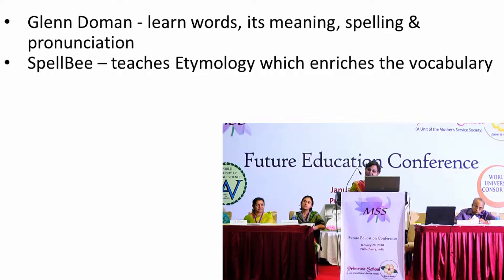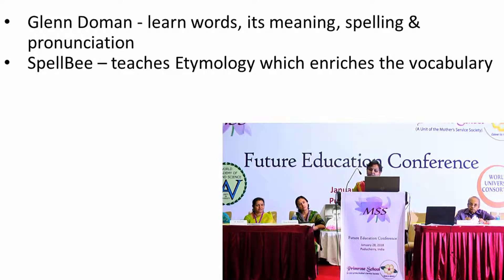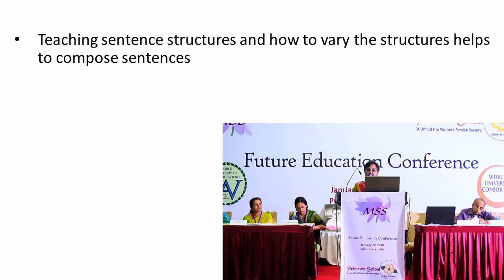We finally think that through Glendorman, kids learn words, meaning, spelling, as well as pronunciation. And through SpellV — Miss Devakani will be telling more about SpellV — through this method they are learning more about etymology, which enriches the vocabulary of a kid. Through teaching composition, we feel they will be able to learn the sentence structures and how to vary them, which will be helpful when they move to primary levels. So this can be taught even from the kindergarten level.